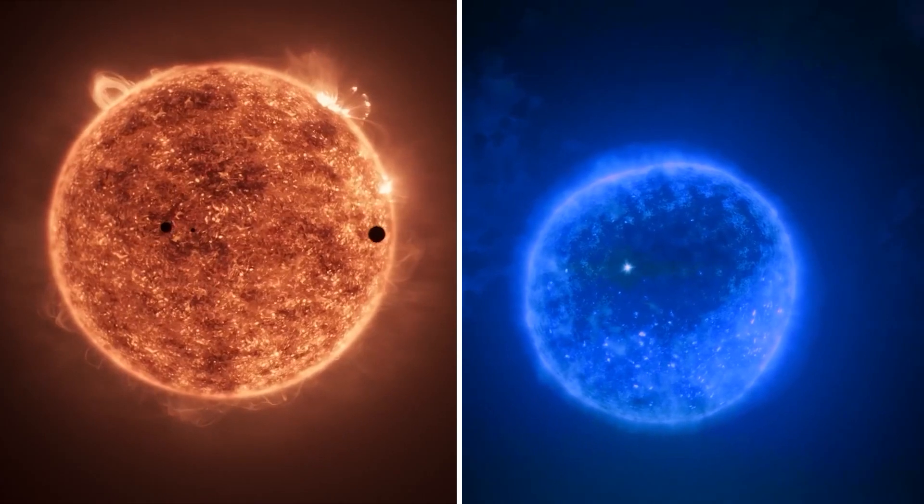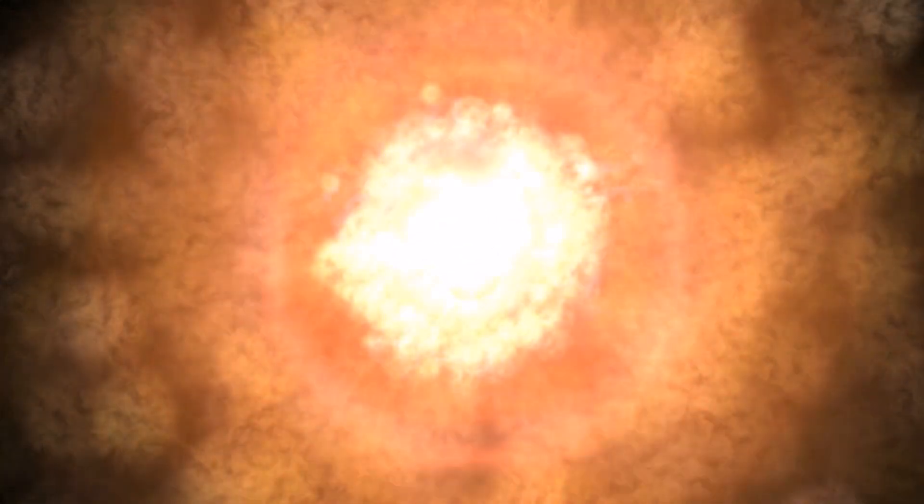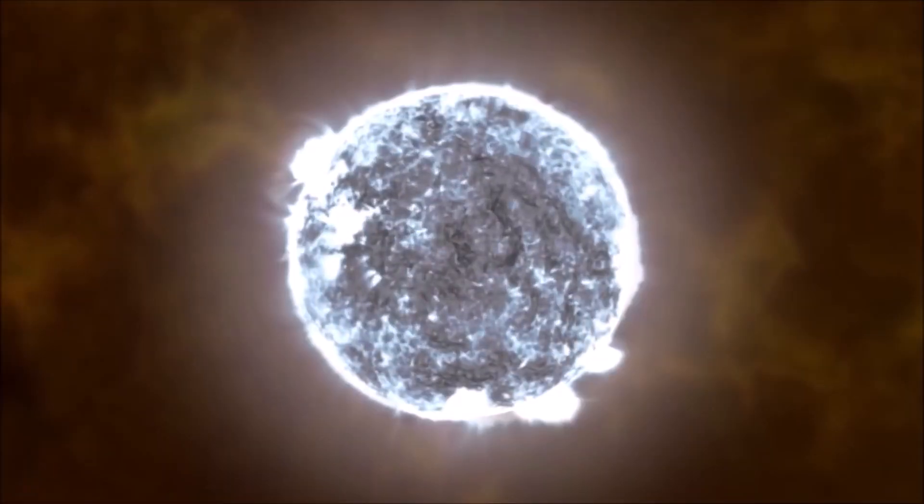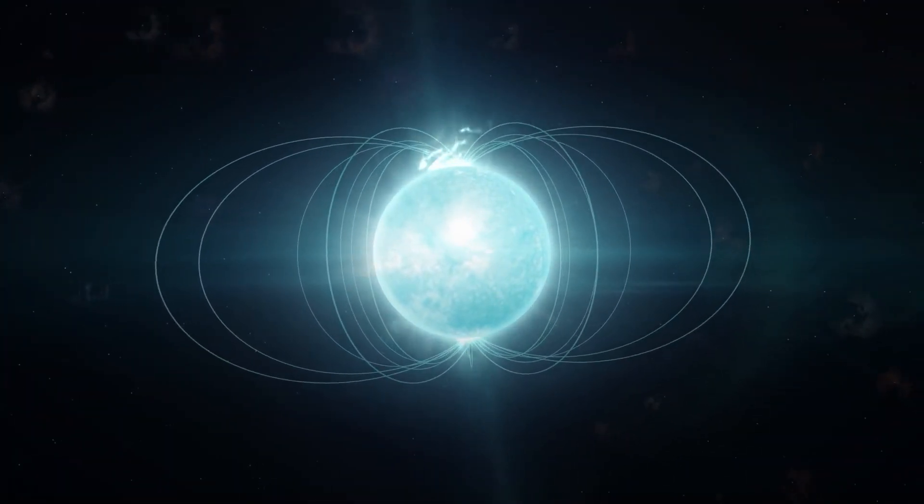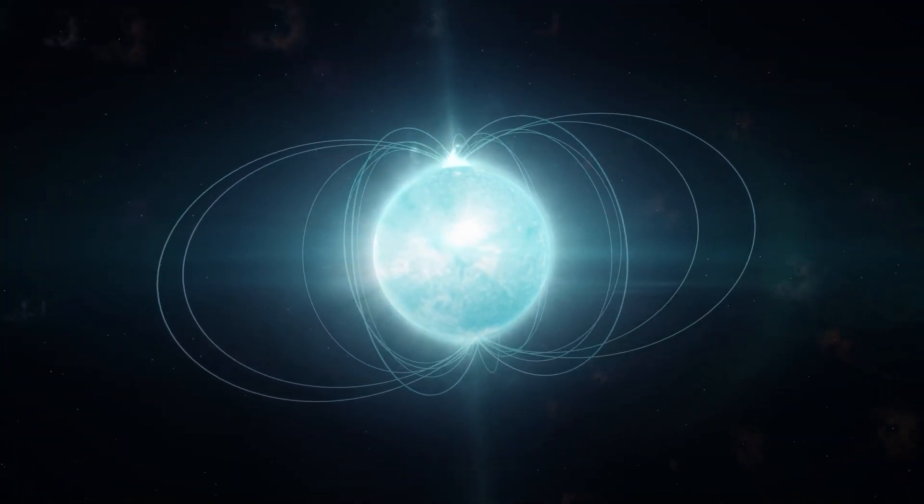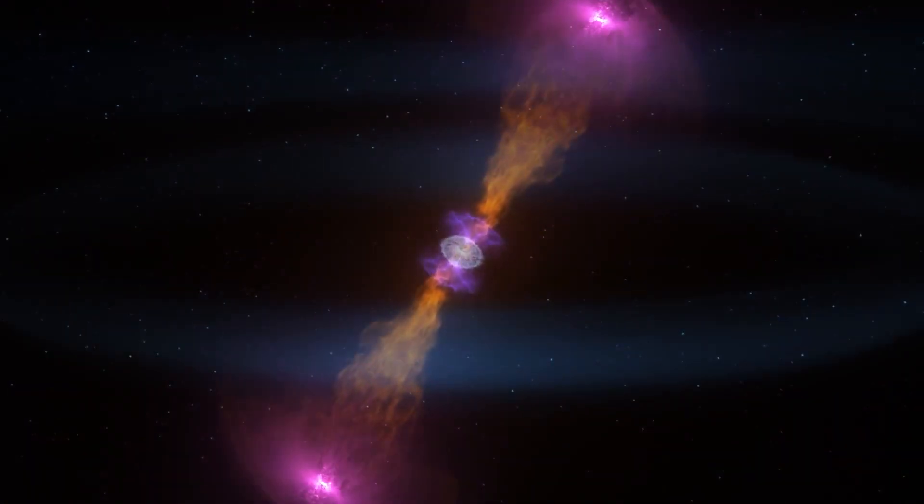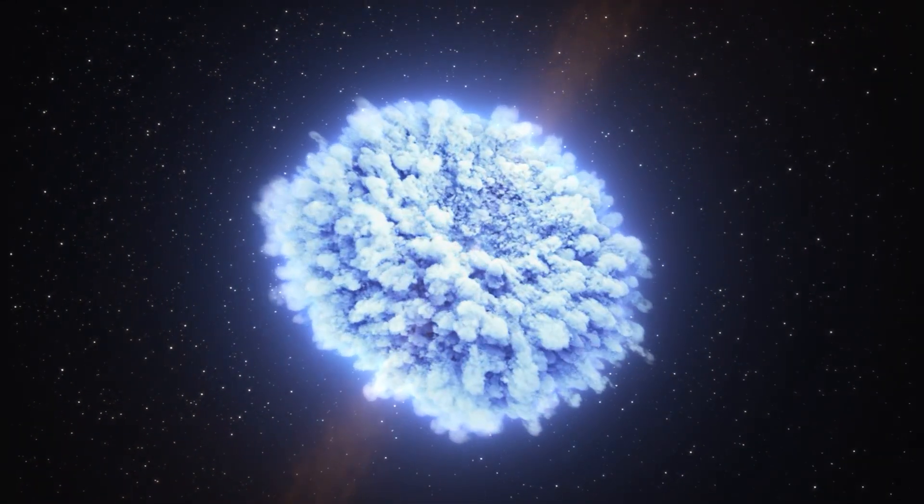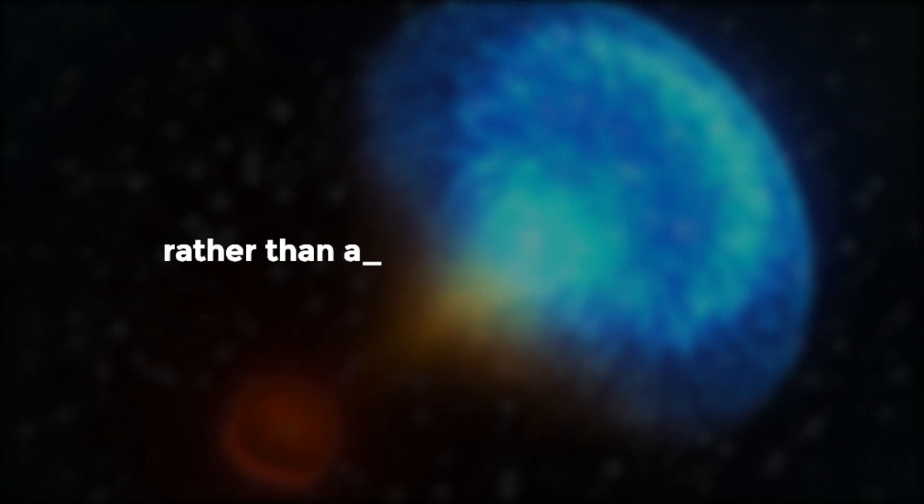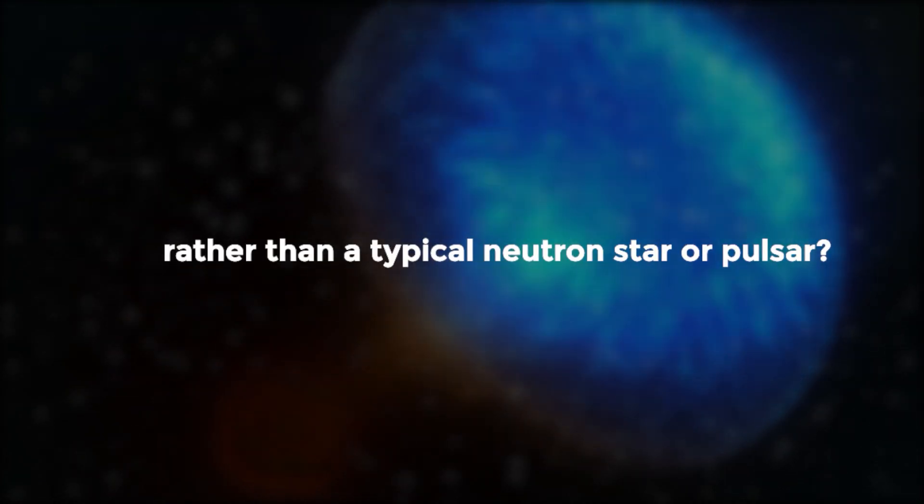Stars significantly larger than the Sun can undergo a supernova explosion, leading to the formation of either a neutron star or a black hole. Magnetars, specifically, are remnants of massive stars that experienced a supernova explosion and collapsed into a neutron star. The mystery lies in understanding why a supernova results in a magnetar rather than a typical neutron star or pulsar.